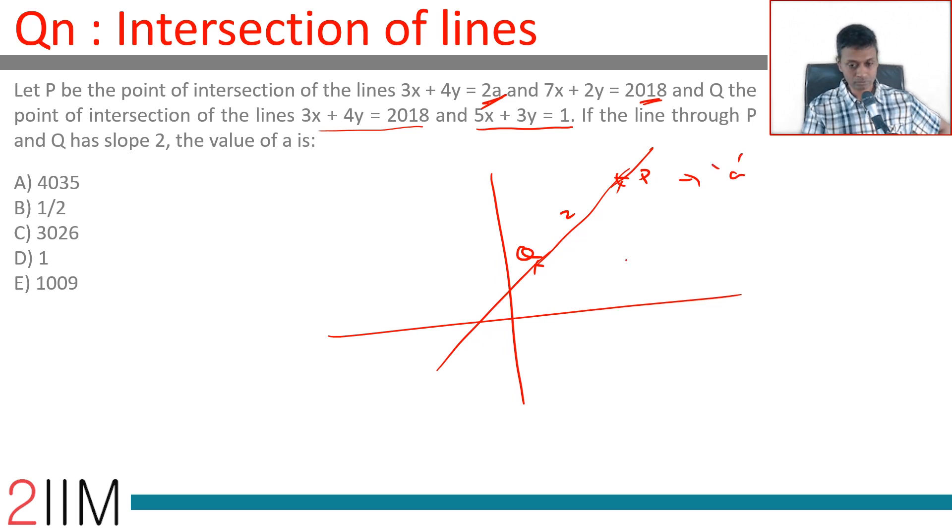Using that we can find a. So that's the idea: Q we can find, that's the point of intersection of these two lines, so we can locate Q and then we can get P in terms of a and then use the idea that PQ has a slope of 2.